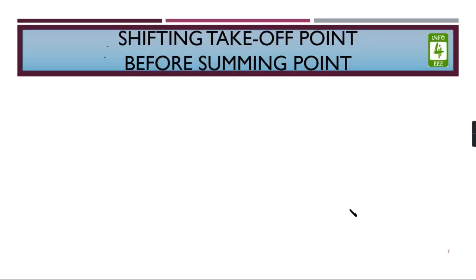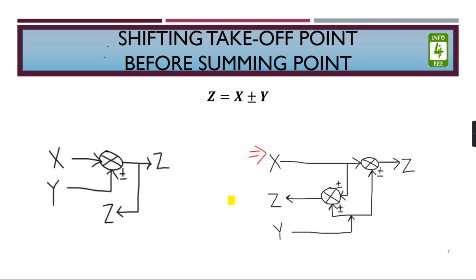The next topic is shifting takeoff point before summing point. Here we have both takeoff point and summing point. Remember that this is a type of complicated transformation, so it is rarely asked in an exam, but we still have to do it for knowledge purposes. To shift this pickoff point before the summing point, we have to introduce a new summing point such that Y entering this summing point is added in both the summing points. The rest is the same: Z is similar, X is similar.